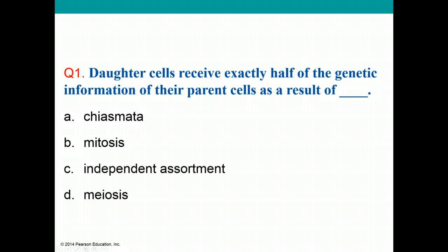Now let us review. Daughter cells receive exactly half of the genetic information of their parent cells as a result of — choose the correct answer. Please write down the letter that corresponds to the correct answer, as you will enter it in the PowerPoint lecture quiz in Blackboard.